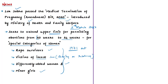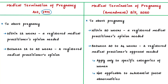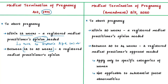Under the 1971 Act, a pregnancy may be terminated within 12 weeks if a registered medical practitioner is of the opinion that continuation of the pregnancy may risk the life of the mother, cause grave injury to her health, or that the child if born would suffer physical or mental abnormalities. For termination between 12 to 20 weeks under the 1971 Act, two medical practitioners are required to give their opinion.